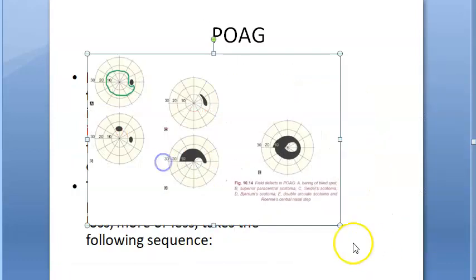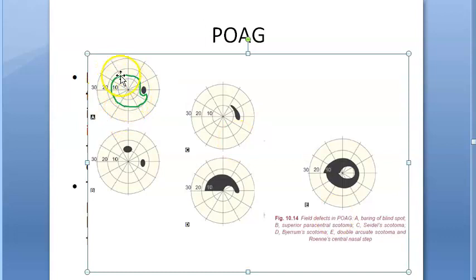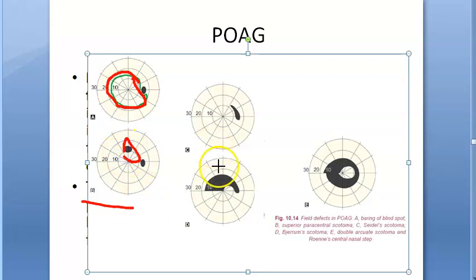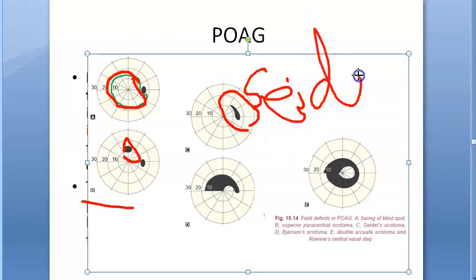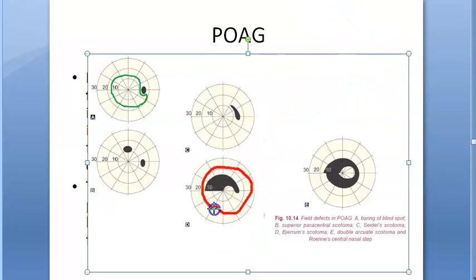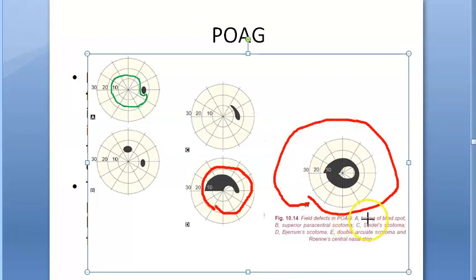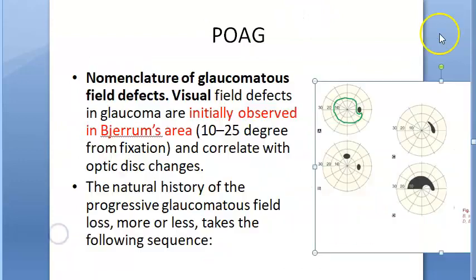Looking at this in more detail on the diagram: we have baring of the blind spot, then B represents superior paracentral scotoma, then Seidel's scotoma (a sickle-shaped scotoma), then Bjerrum's scotoma, then double arcuate scotoma, and Ronne's central nasal step — the nasal step is shown here. Initially the defect is in the Bjerrum's area.